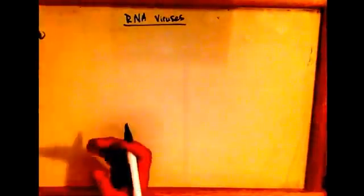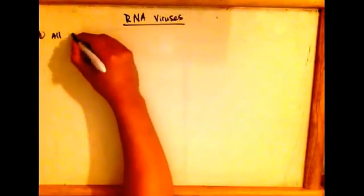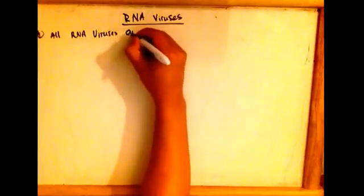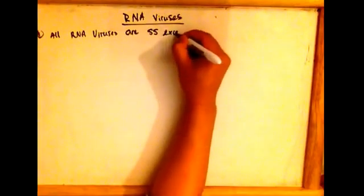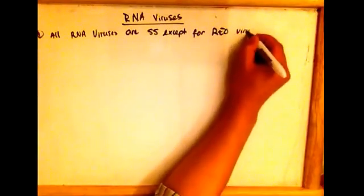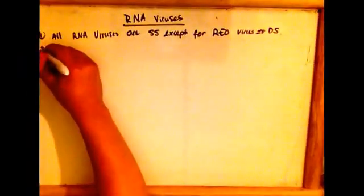Here are some interesting facts about RNA viruses. Fact one: RNA viruses are single-stranded, except for the reovirus, which is double-stranded. This is in contrast to DNA viruses, which are all double-stranded except for the parvovirus.